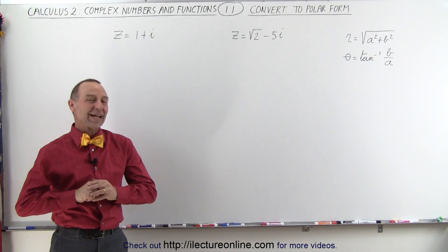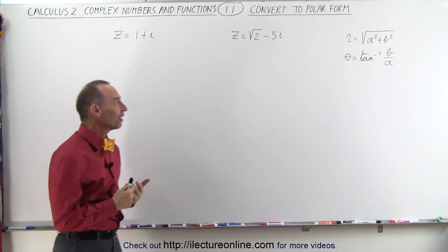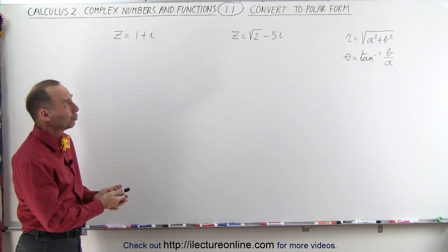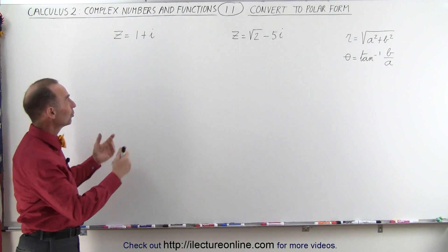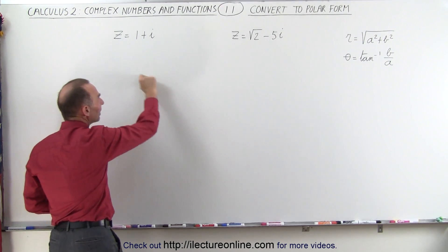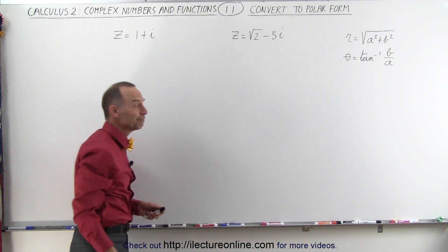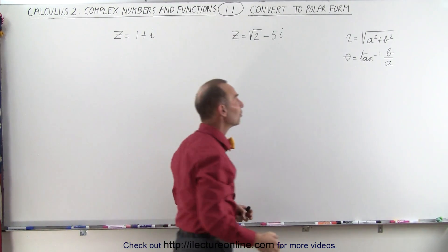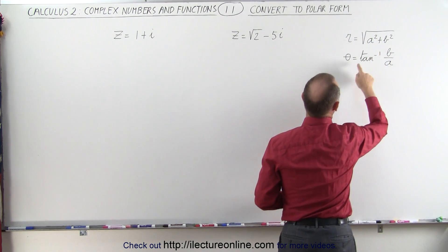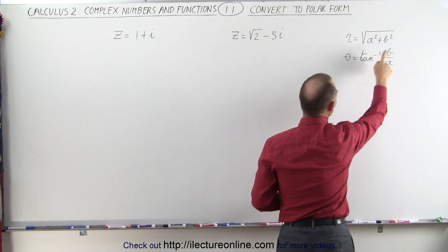Welcome to our lecture online. Let's take complex numbers that are in the traditional form a plus bi and convert them to polar form. Here are two simple examples: z equals 1 plus i, and z equals the square root of 2 minus 5i. Remember that to find r we take the square root of a squared plus b squared, and to find the angle we take the arctangent of b over a.